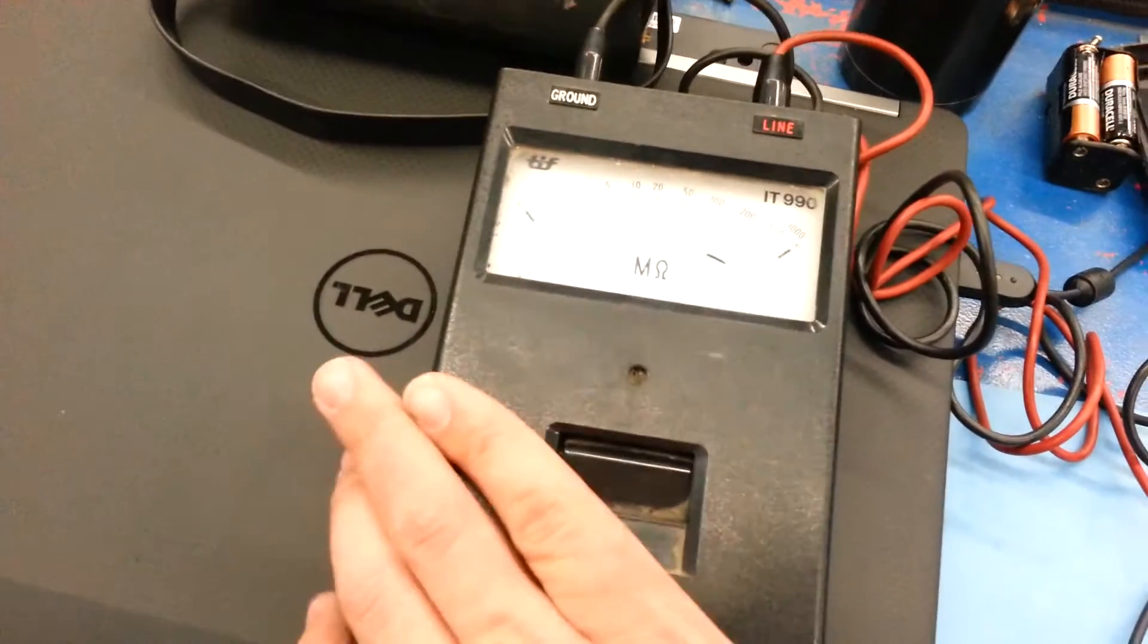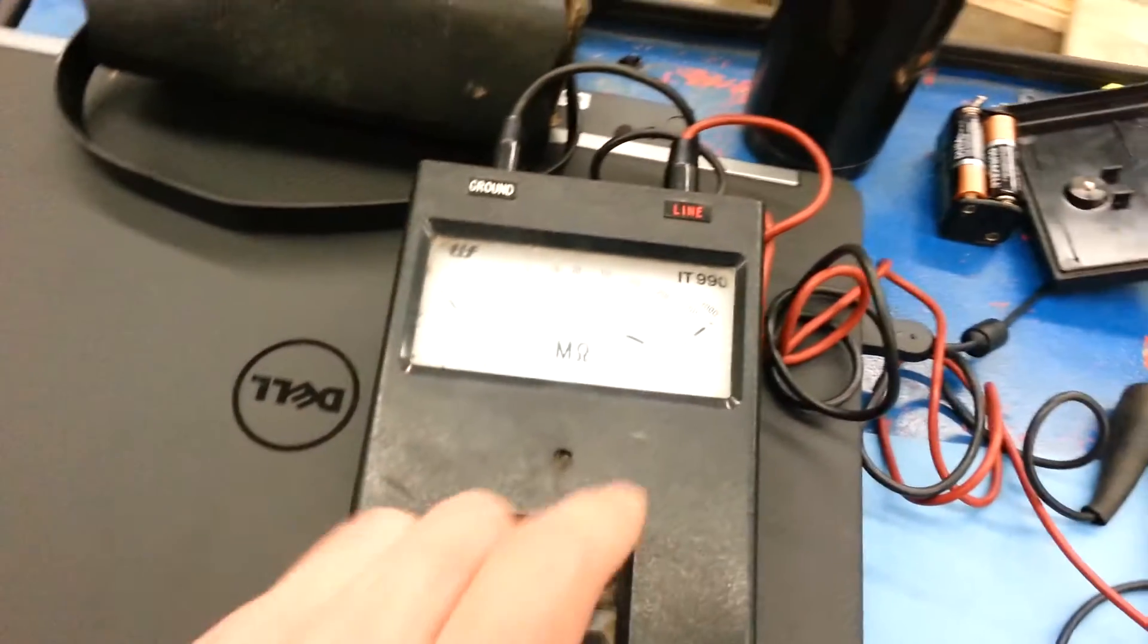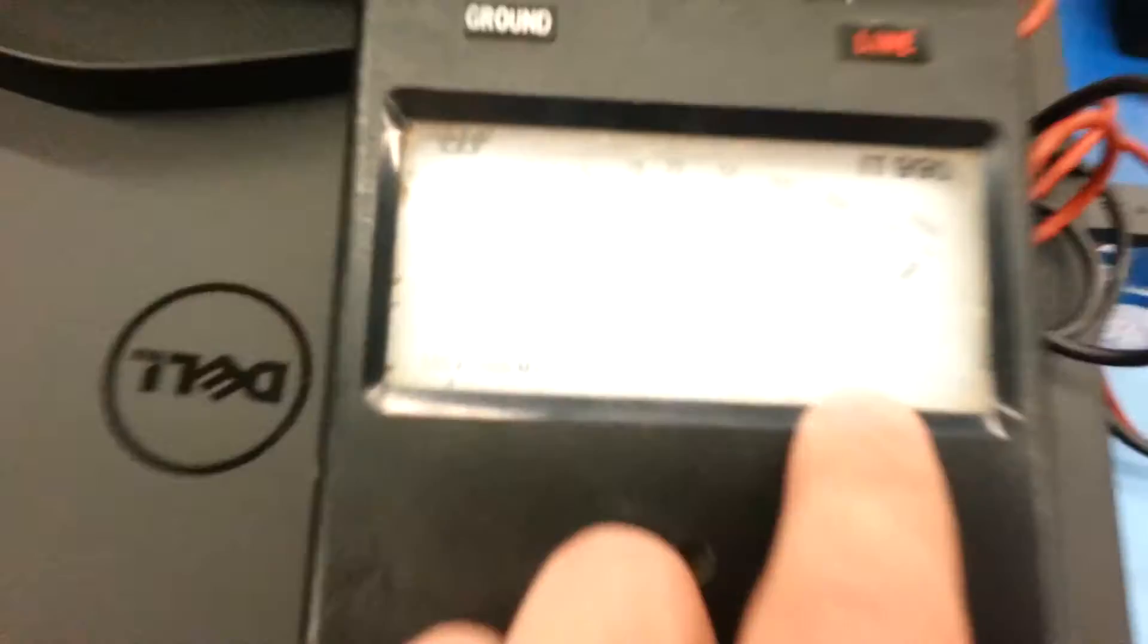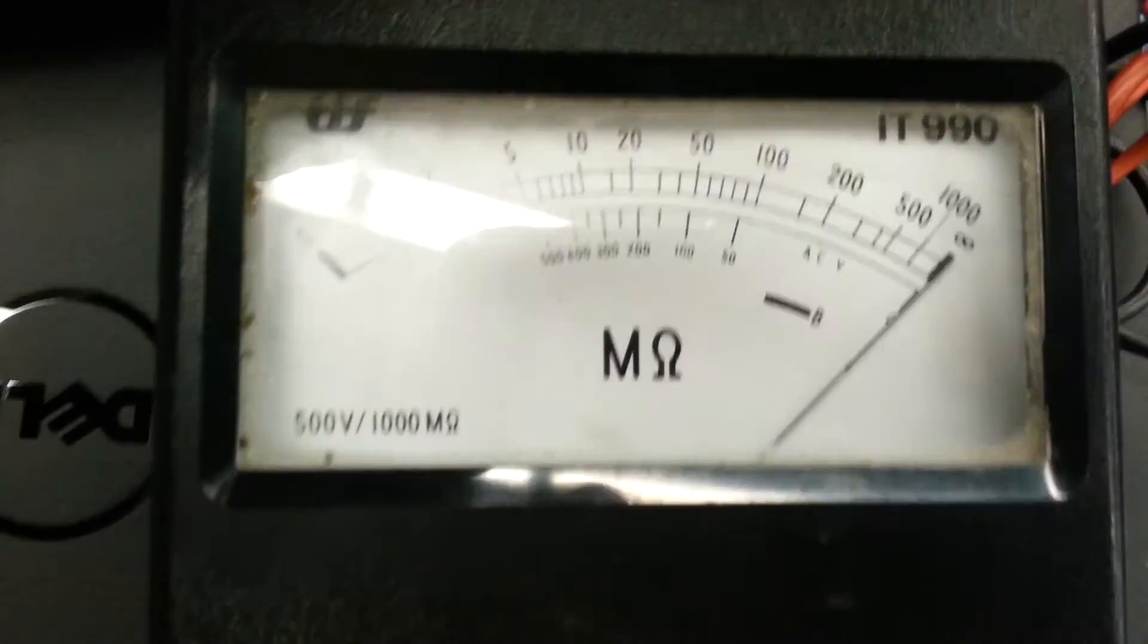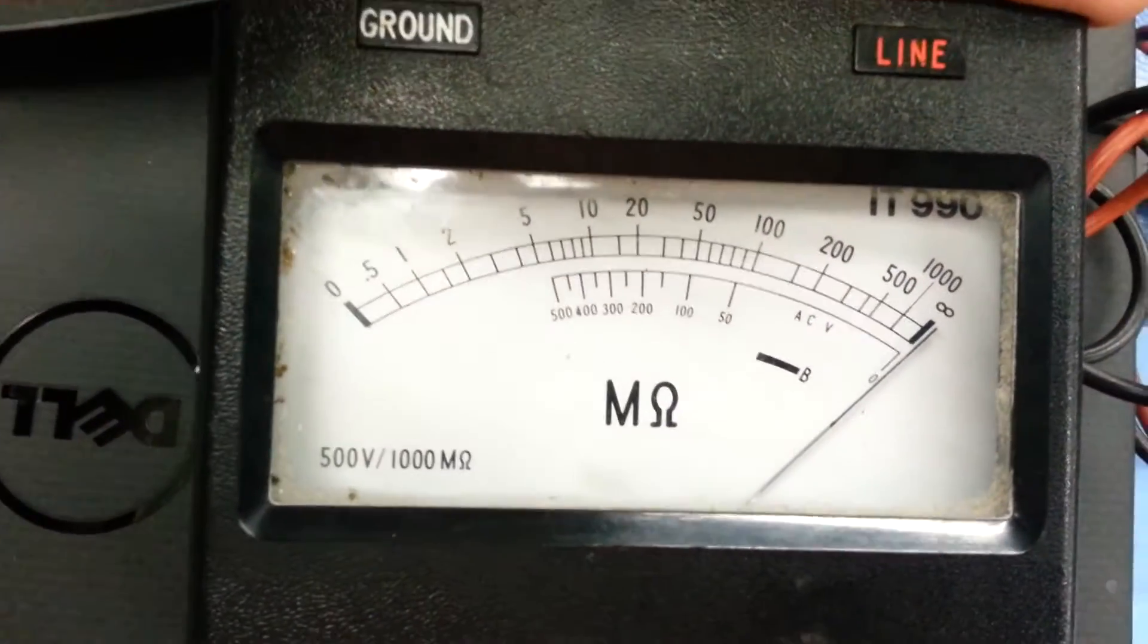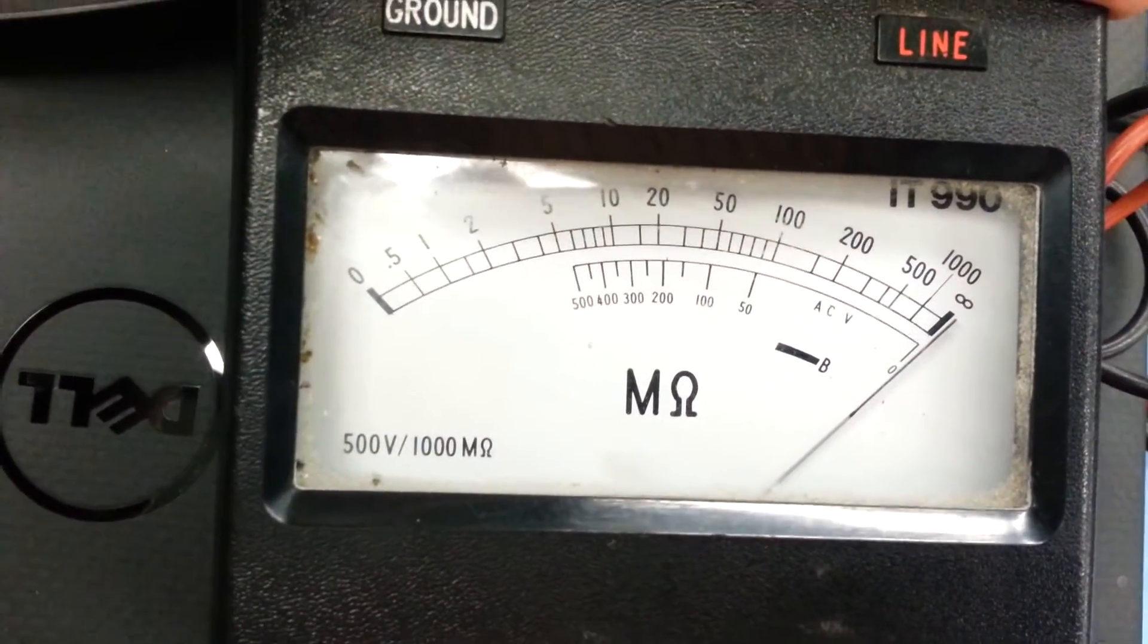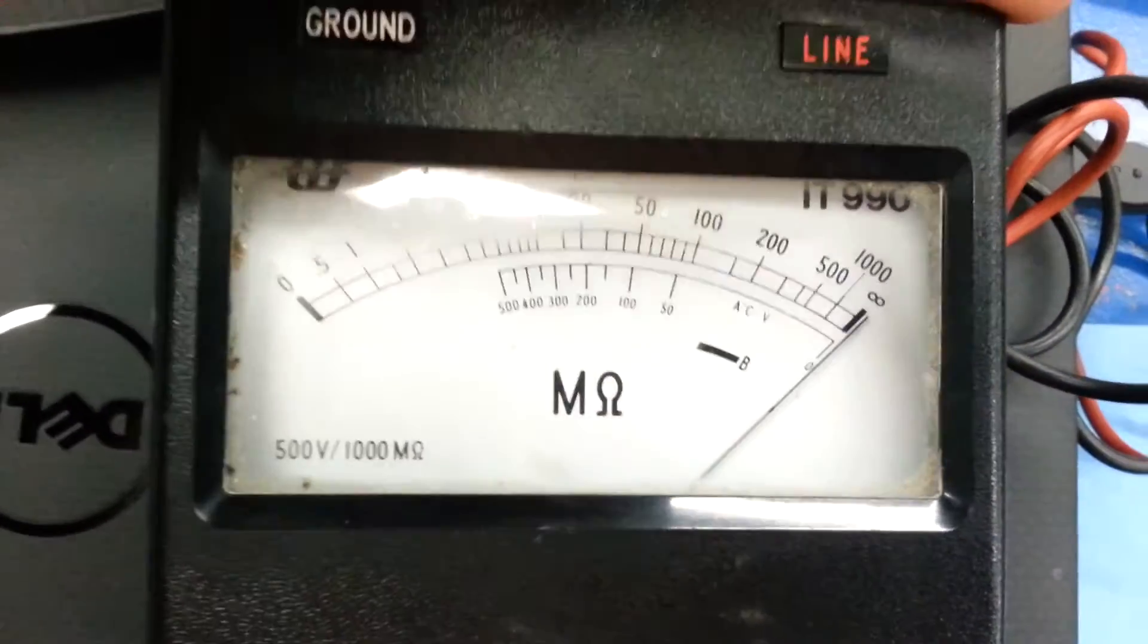This is a Japanese-made device which is used to measure resistances up to a gigaohm. That's right, an entire gigaohm. The device is made for testing the resistance of insulation, which most of it will just go to infinity.